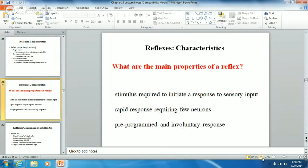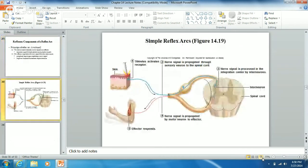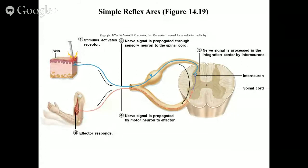Now let's look at a simple reflex arc — slide 30. Nothing deep, nothing major, really simple. In a reflex arc, there are five things. Thing number one: you have to have a stimulus. You are not going to have a reflex without a stimulus. If you have an effector responding with no stimulus involved, that is a disorder and we need to get to the bottom of it.